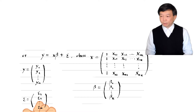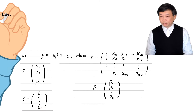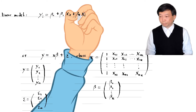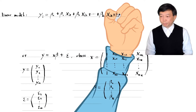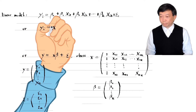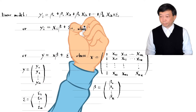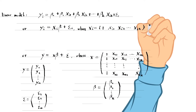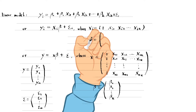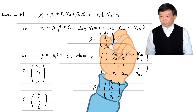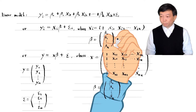You can also write the model in the individual observation form, where yi represents the i-th observation. The matrix form represents all n observations.